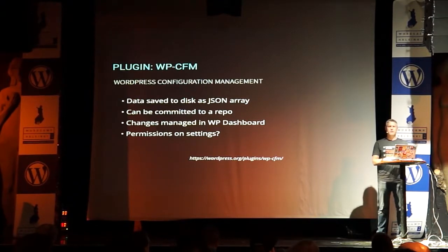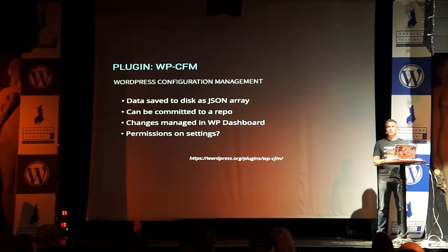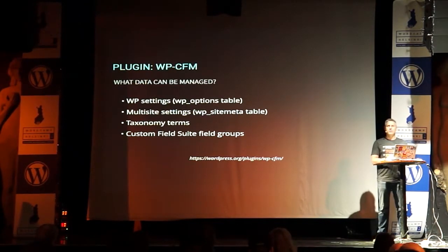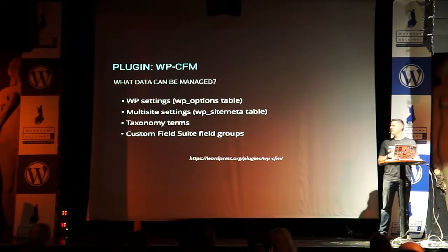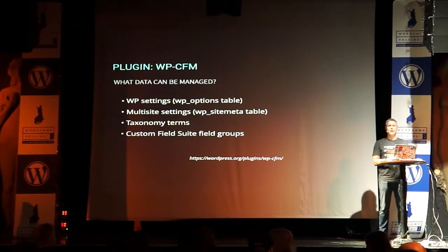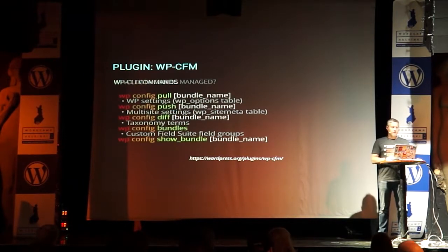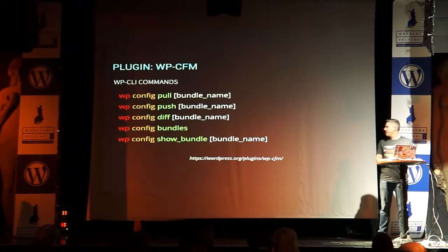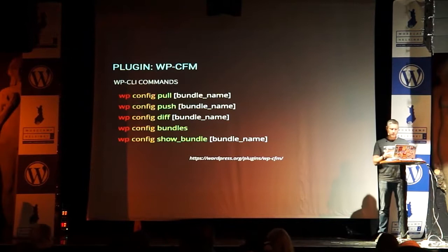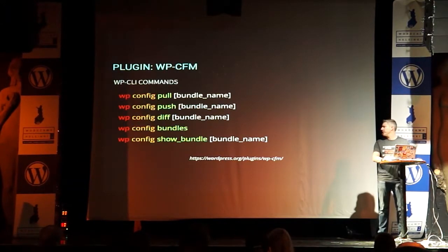You can manage these settings in the WordPress dashboard, which gives non-technical users a way to alter settings if they can't access the command line or file system. Data you can manage includes options, site meta, taxonomy, and custom fields. If you're building a plugin and using options, you can save those as well. Using WP-CLI, you push changes to disk then pull them into the database. There's also a diff command showing the difference between what's on disk and what's in the database, and you can create bundles through WP-CLI as well.